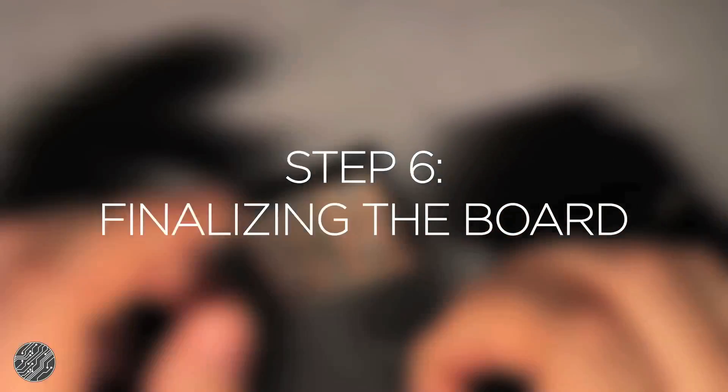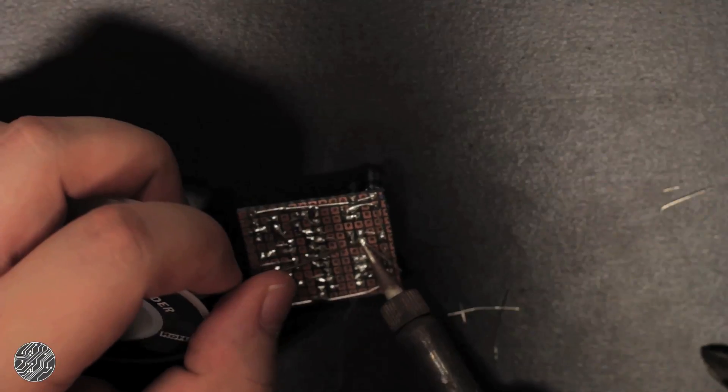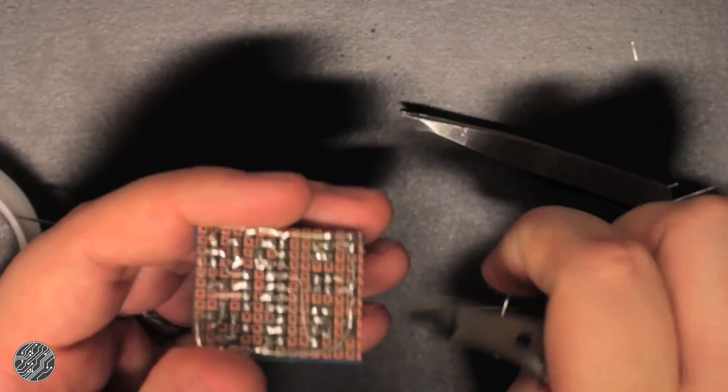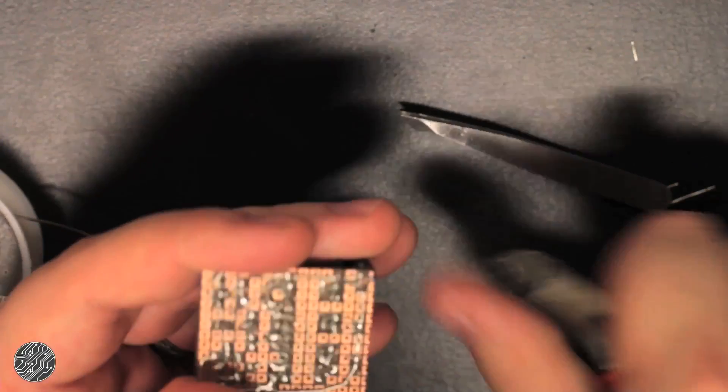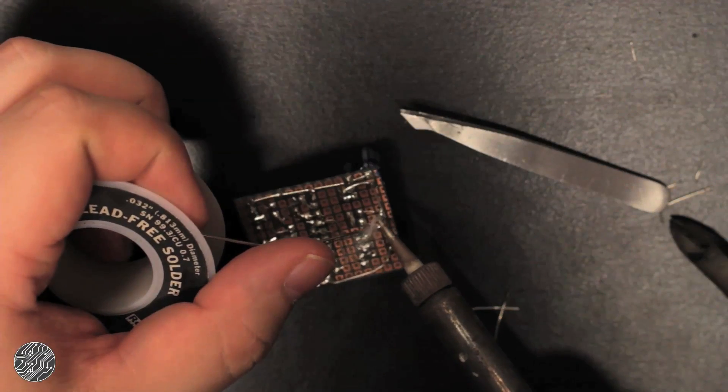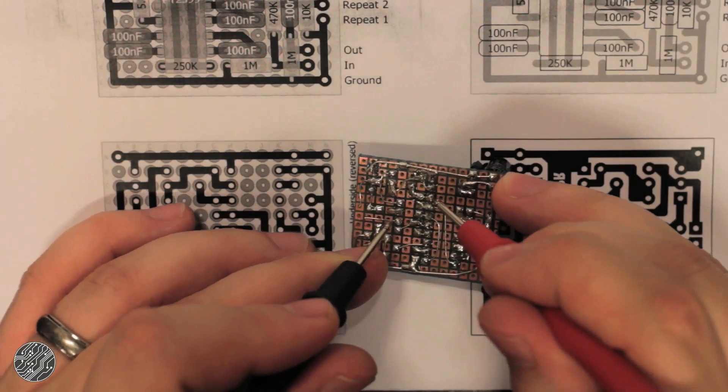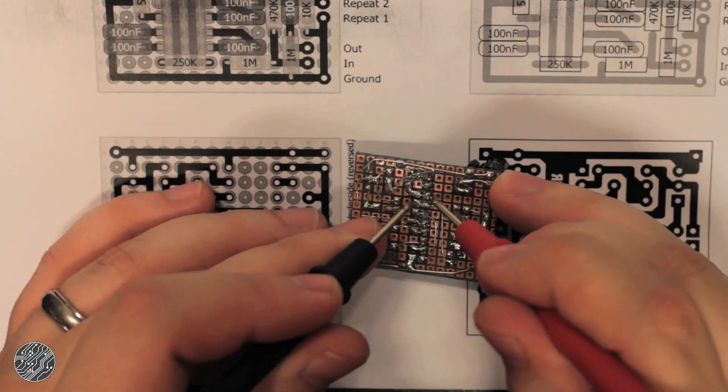Step six: finalizing the board. Once all the components are soldered to the board, there will probably be a few connections left to make. Here I use cutoffs from components I've already soldered onto the board, but you can also use hookup wire for this. Once all the connections have been made, use a digital multimeter to make sure there aren't any accidental jumps, shorts, or other mistakes.